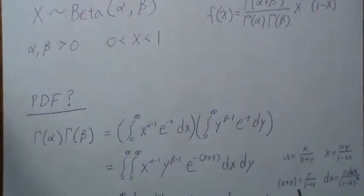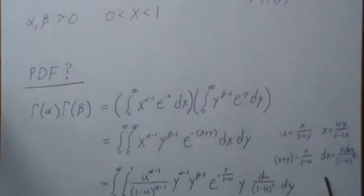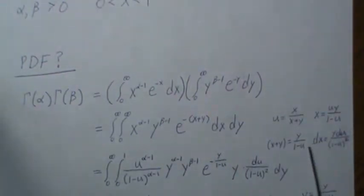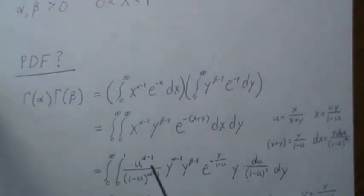To substitute in this X plus Y, we can solve for X plus Y here and we get Y over 1 minus U. When you take these and plug them in, you get this. The DX is this piece right here. For this piece, X plus Y is this, which is what we have here, and X is this.